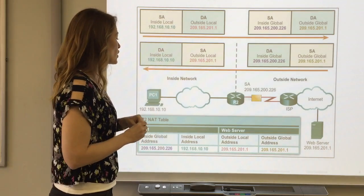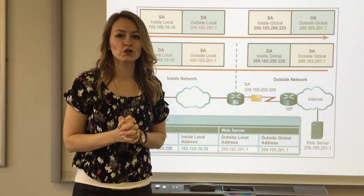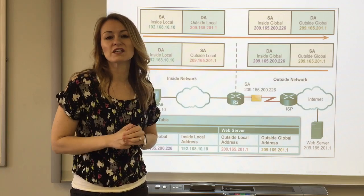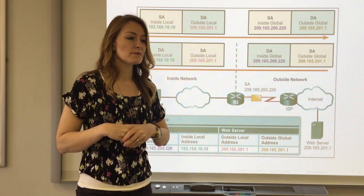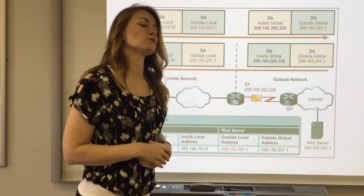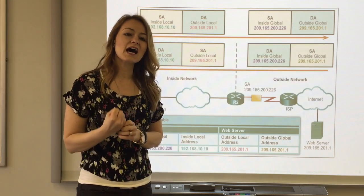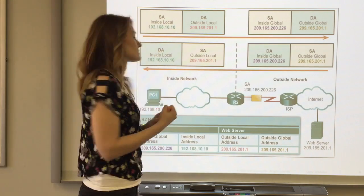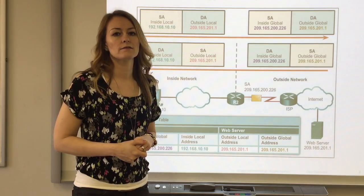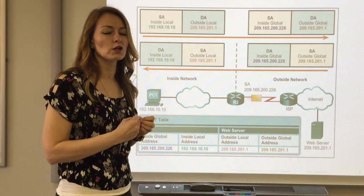So we start with a packet being sent from our local area network, inside the family. Little slugger wants to send a letter to his aunt Claire. Inside the network, the inside local address is 192.168.10.10. That would be equivalent to little slugger. That's the inside local address.